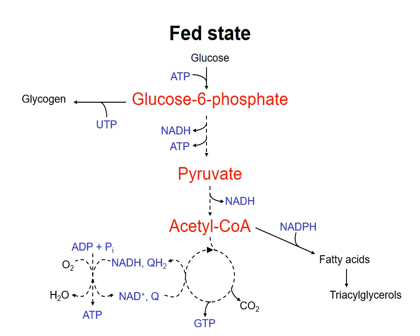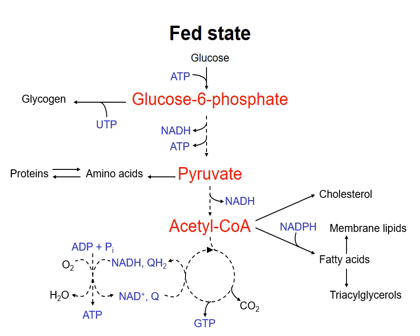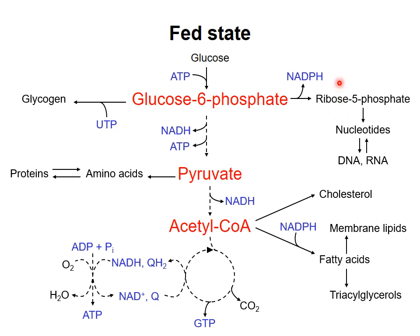When blood glucose is high, biosynthetic pathways will also be favored. When the body has a lot of energy, it is a good time to make essential molecules such as membrane lipids, cholesterol, amino acids, nucleotides, and many other molecules. So, the pentose phosphate pathway will be activated as a source of NADPH for biosynthesis and ribose 5-phosphate for nucleotides.